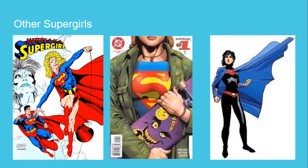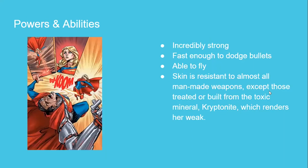Those are the Supergirls. Right now, after New 52 and Future State, they've rebooted again and we're back to Kara Zor-El — the original Supergirl. The other Supergirls are still in the background, but Kara is the one they're really focused on now, and she's the one the Supergirl TV show is based on. These are her powers and abilities: she has the same powers as Superman — super strength, able to dodge bullets, able to fly. She has skin resistant to most man-made weapons unless exposed to Kryptonite, which renders her weak.